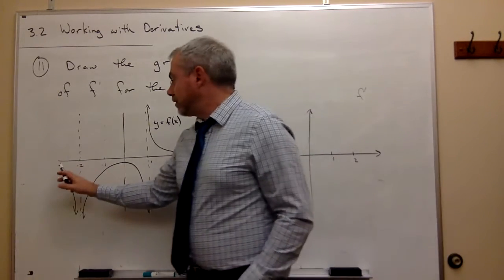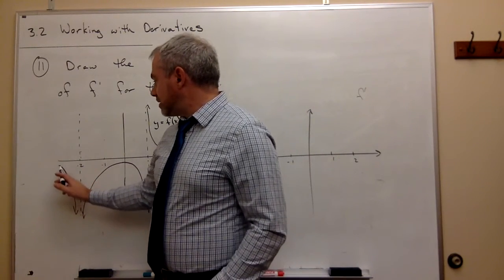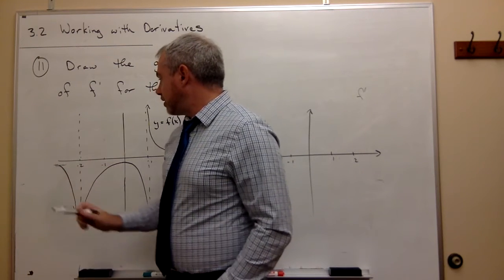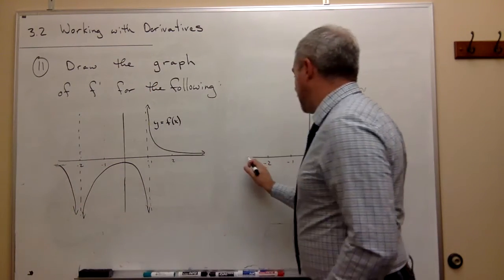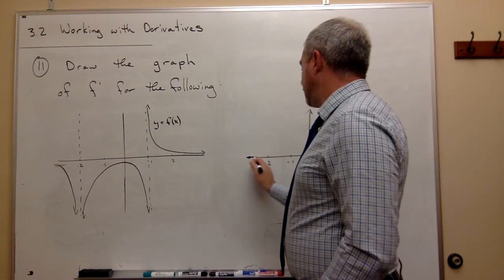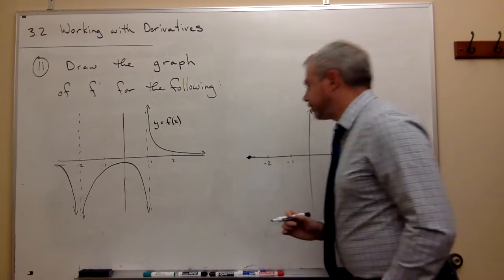So let's start over here. Over here, it looks like this is getting pretty close to having a slope of 0 over here. So I'm just going to kind of pretend that it does. And I'll put a point 0 over here for my function, for my f prime function.